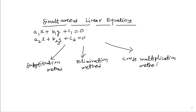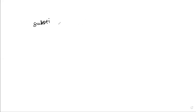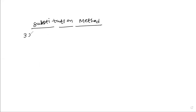Let's begin with the first approach: the substitution method. I'll explain all three methods with worked problems. For the substitution method, let's take a pair of equations: 3x − y = 23, and x/3 + y/4 = 4.